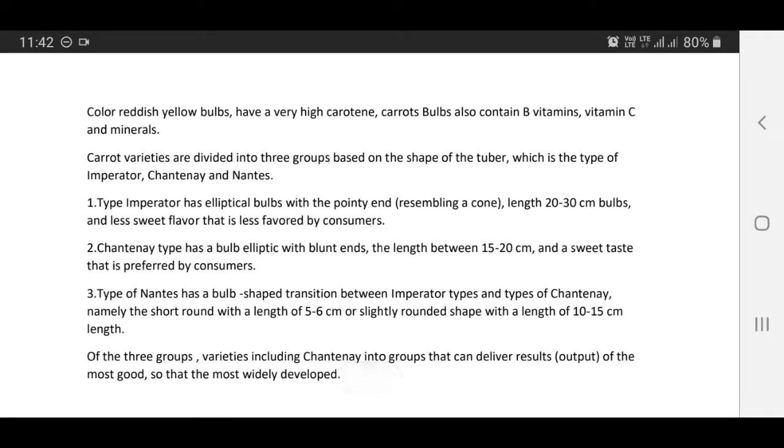Type Imperator has elliptical bulbs with a pointy end resembling a cone, length 20-30 cm bulbs and less sweet flavor that is favored by consumers. Chantenay type has elliptical bulbs with blunt ends, the length between 15-20 cm and sweet taste that is preferred by consumers.